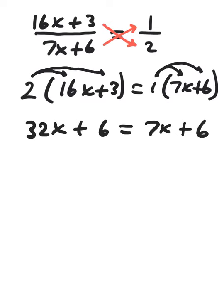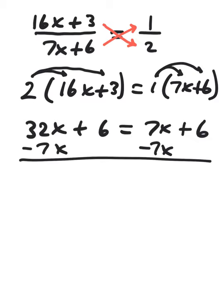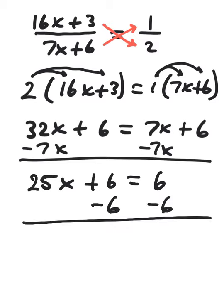Let's collect the x's on one side. We can subtract 7x from both sides of the equation. That gives us 25x plus 6 equals 6. Whatever side you collect your variables on, move your constant terms to the other. So we want to subtract 6. Make sure you do the same thing to both sides. 25x is equal to 0.